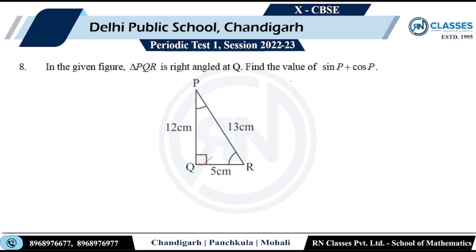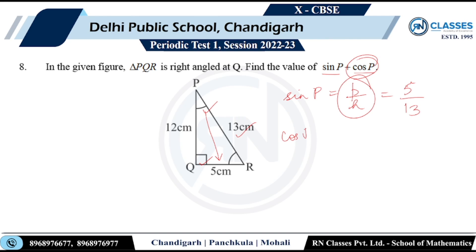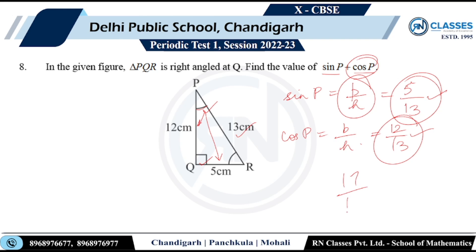Question 9: In the given figure, angle PQR = 90°. Find sin P + cos P. Sin P = perpendicular/hypotenuse = 5/13. Cos P = base/hypotenuse = 12/13. Adding them: 5/13 + 12/13 = 17/13. That is the answer.